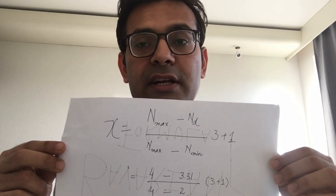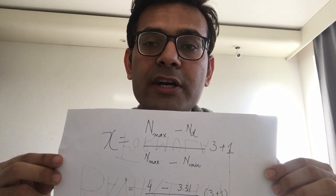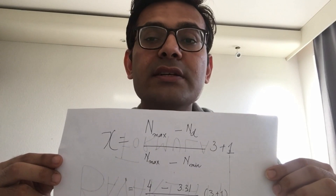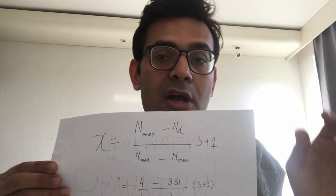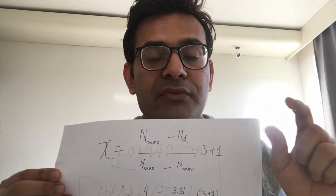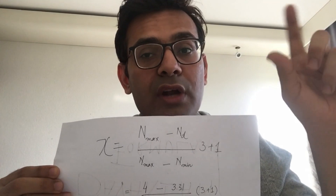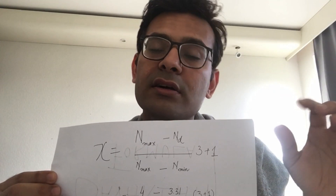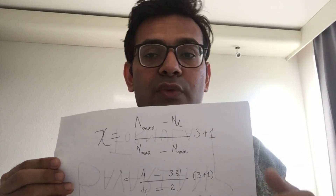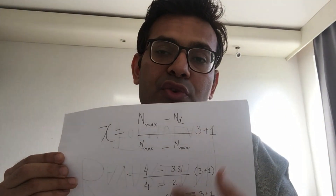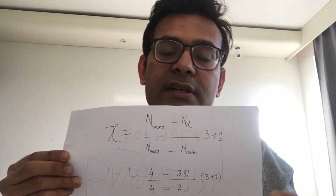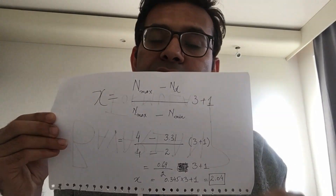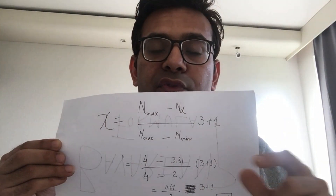Continuing with the formula: 4 minus 3.31 gives 0.69. Dividing 0.69 by 2 gives 0.345. The key part here is that the bracket must be respected — once the division is done and you have 0.345, you then multiply by 3, giving 1.035.